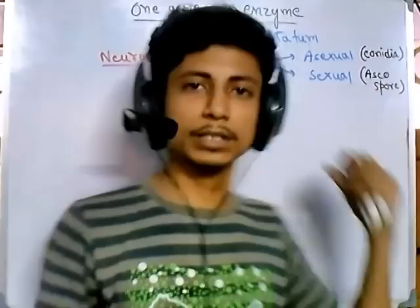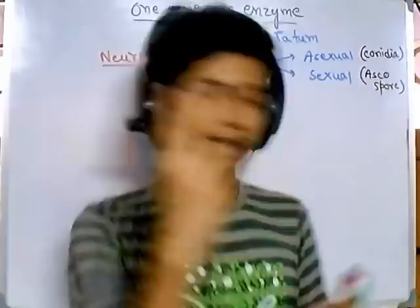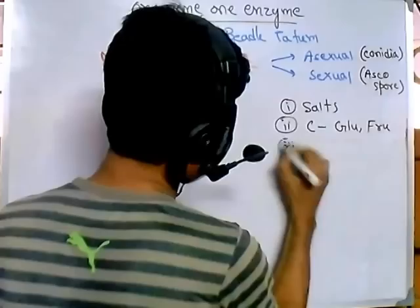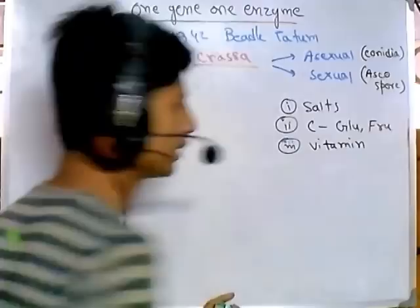They found that the growth of this bread mold required three major things: first, minerals or inorganic salts; second, a carbon source like glucose or fructose; and third, a vitamin — though they didn't know which vitamin initially. If all three things are provided, Neurospora crassa grows normally.